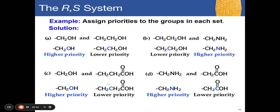A correction: nitrogen has atomic number 7, not 5. So: oxygen has 8, carbon has 6, and nitrogen has 7. Therefore, nitrogen is prioritized over carbon (7 > 6), and oxygen is prioritized over both. For the examples: when comparing oxygen (8) versus carbon (6), prioritize oxygen. When comparing nitrogen (7) versus carbon (6), prioritize nitrogen.